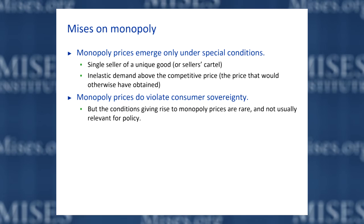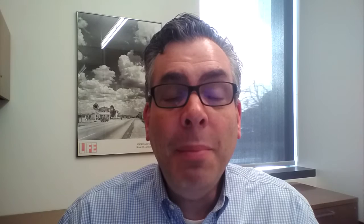Rothbard offered a refinement of Mises' monopoly theory. Rothbard agreed that the key is not monopoly as a condition, but monopoly prices. Rothbard started with Mises' analysis and said it's correct as far as it goes, but there are some problems. Namely, Rothbard said all sellers face a downward-sloping demand curve for their product, even if it's only infinitesimally downward sloping. In other words, no two products are truly identical — even if they look very similar, they're offered under different circumstances, sold in different places at different times.